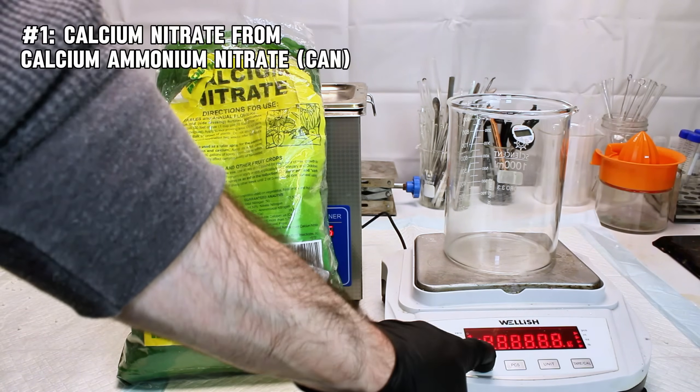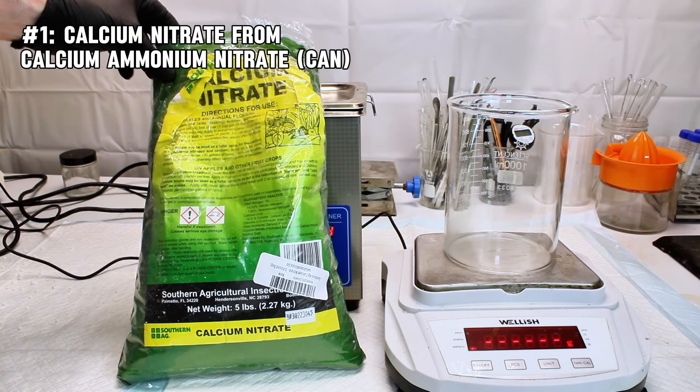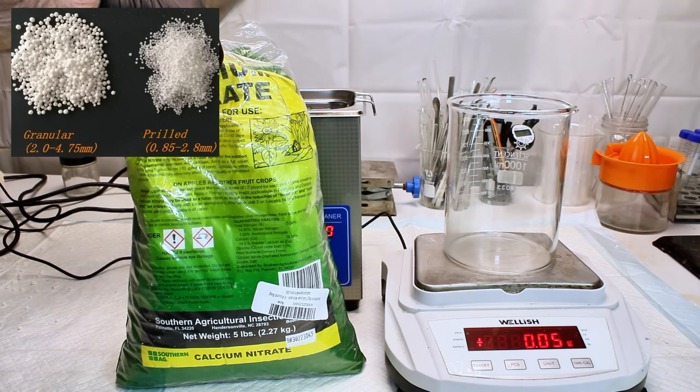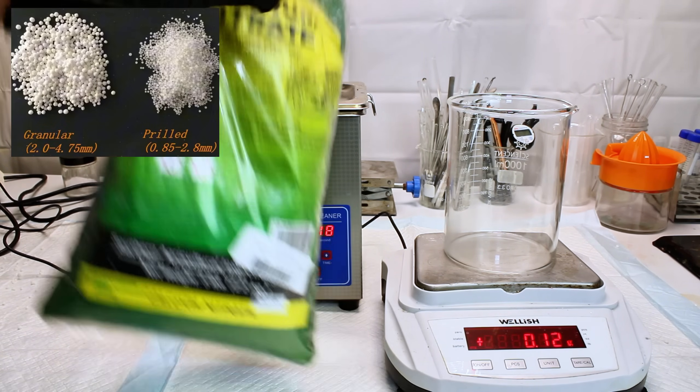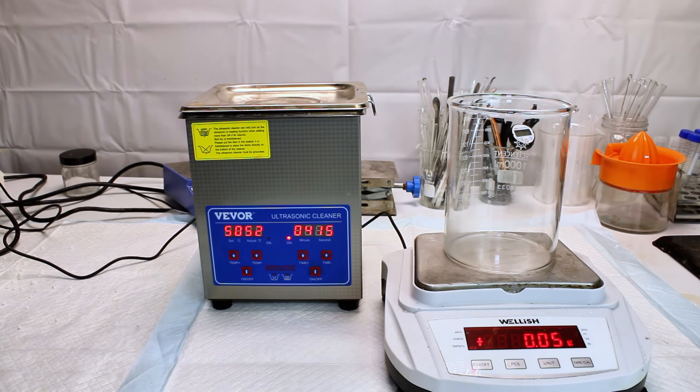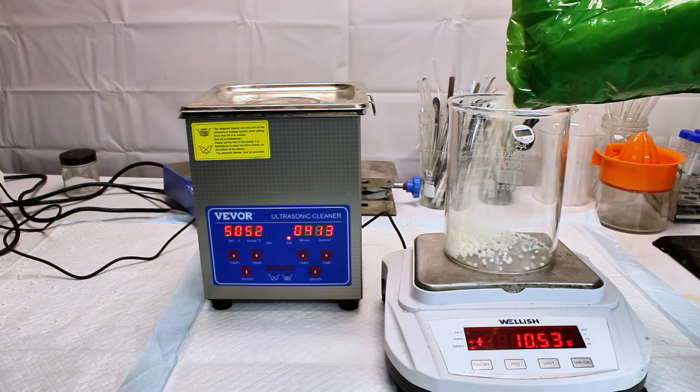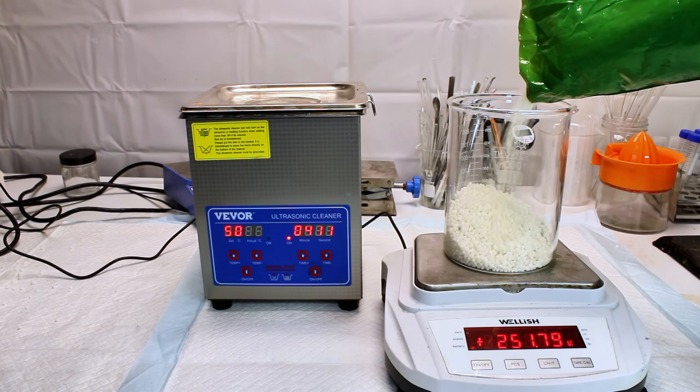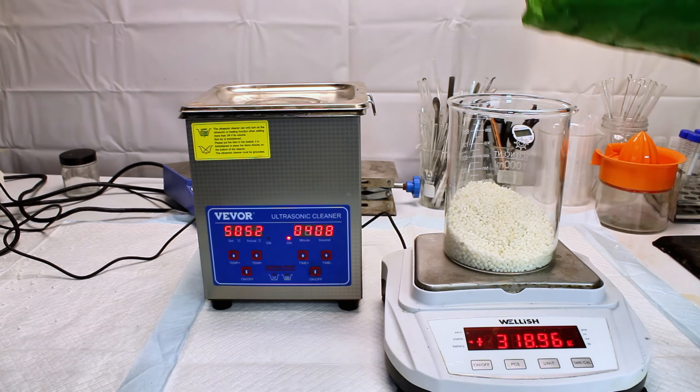First up I have some calcium nitrate, which like most fertilizer is sold as off-white granules called prills. The main issue with most fertilizers is that they're far too dirty for use as reagents. But this calcium nitrate has a second problem in that it isn't actually calcium nitrate.